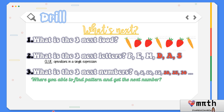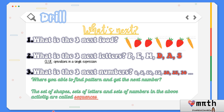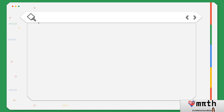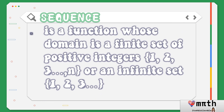The shapes, letters, and numbers in the above activity are called sequences. A sequence is a function whose domain is a finite set of positive integers 1, 2, 3, up to n, or an infinite set of 1, 2, 3.